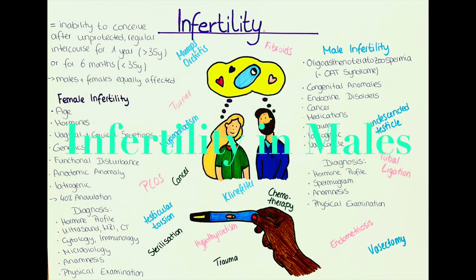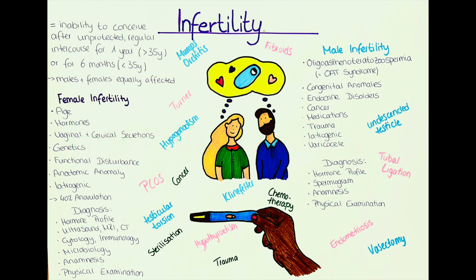Let's now talk about infertility in males. The most common cause for infertility in men is the insufficient or absent production of sperm cells and the decrease in sperm motility. In many cases, there is a combination of both causes, called oligoasthenoteratozoospermia, usually abbreviated as the OAT syndrome. In most cases, the cause for the OAT syndrome is unknown, but there are a few identifiable causes, including congenital anomalies of the male reproductive tract, such as undescended testicles.